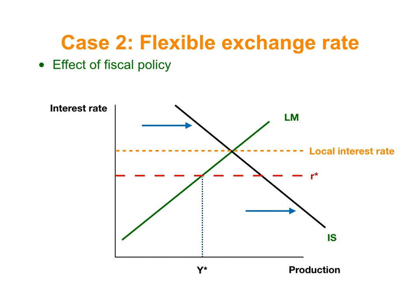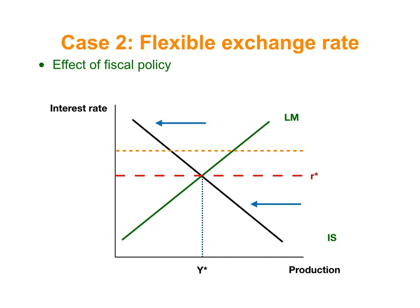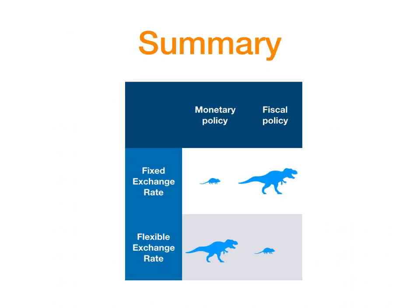That increase in the supply of dollars is going to appreciate the quetzal, the local currency. When there is this appreciation of the quetzal, there is going to be a reduction in net exports — exports are going to be relatively more expensive because of this appreciation — and you're going to see a shift to the left of the IS curve. That means that fiscal policy is not going to have an effect.